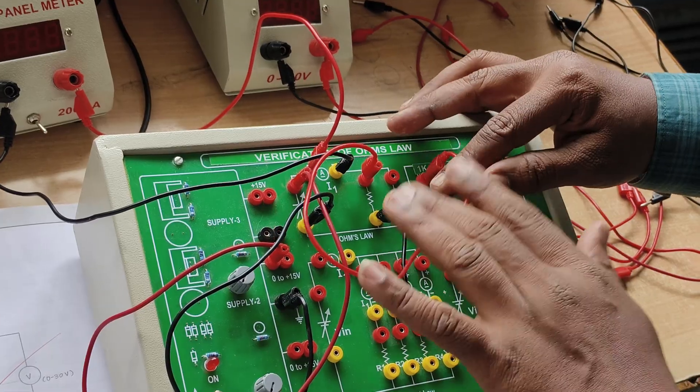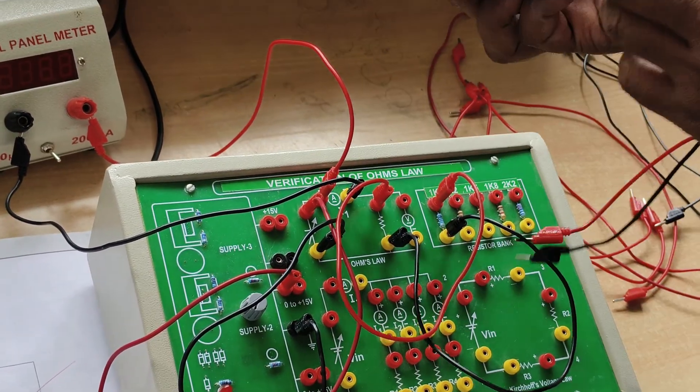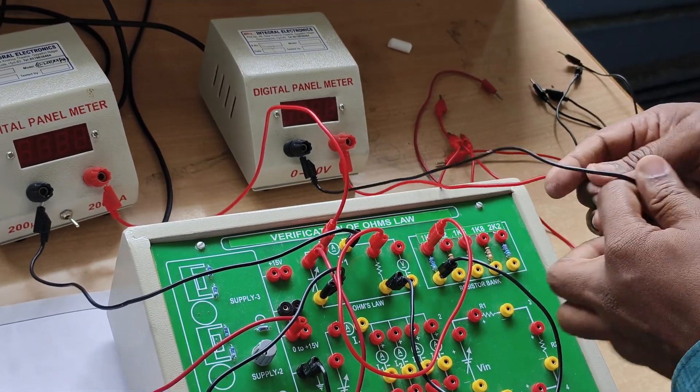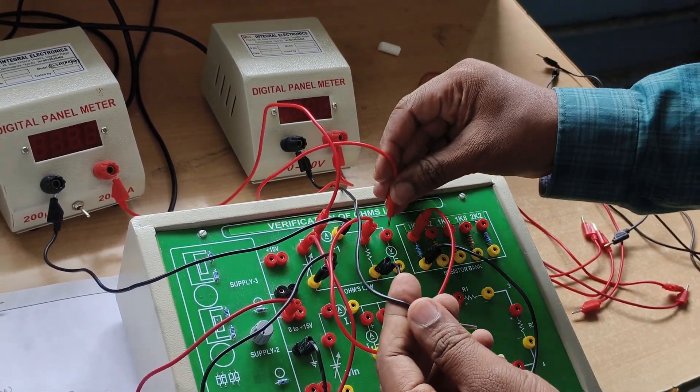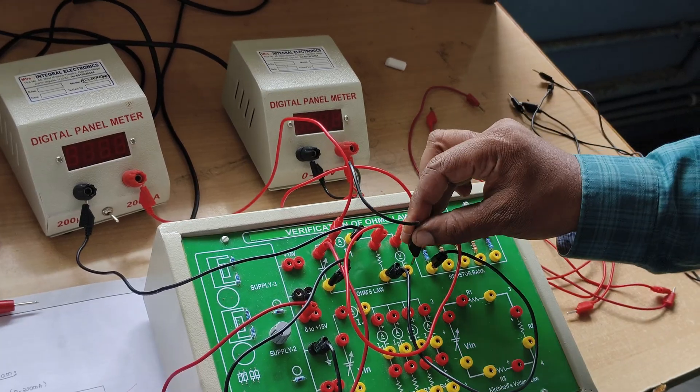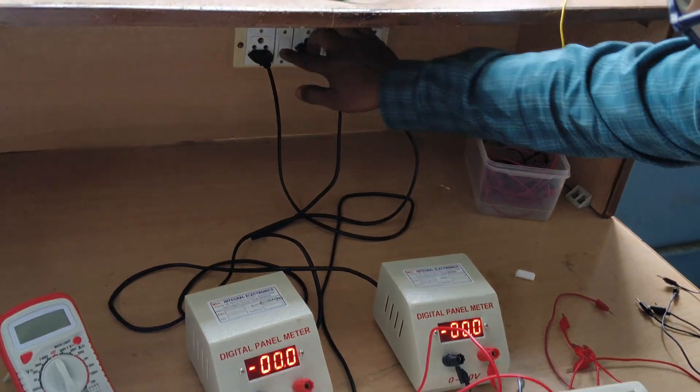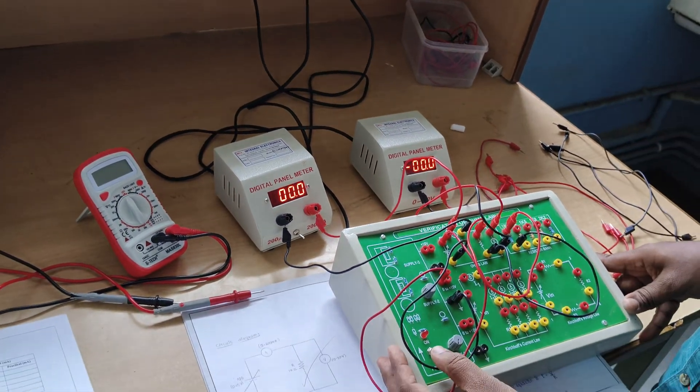Next, we connect a voltmeter with a 0 to 30 volts range, positive to positive and negative to negative. After that, we switch on the circuit and the RPS.